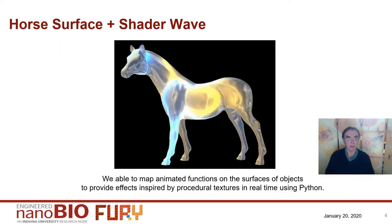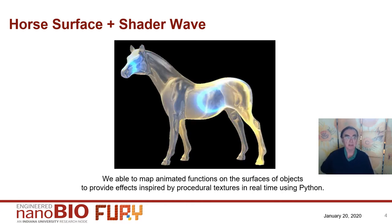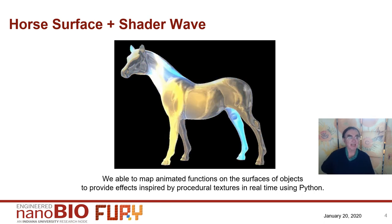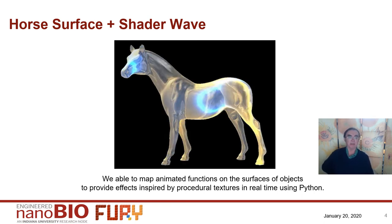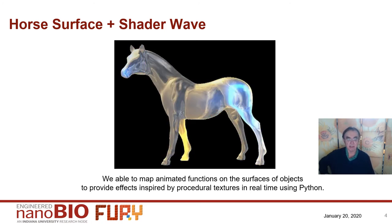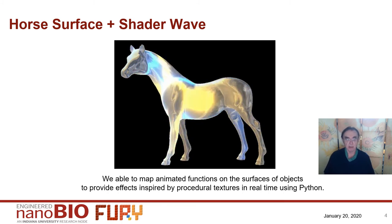Here's an example of shading capabilities with the horse surface. This shows how FURY supports surfaces with dynamic coloring, and you can of course put some more complex structure there.